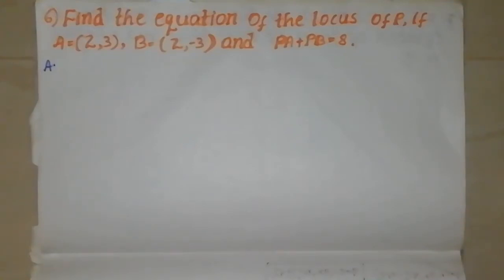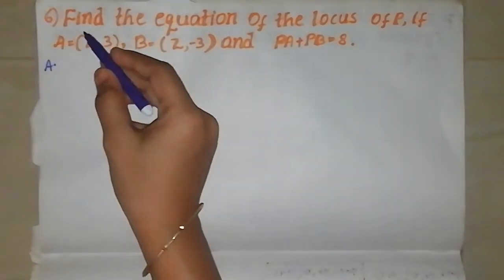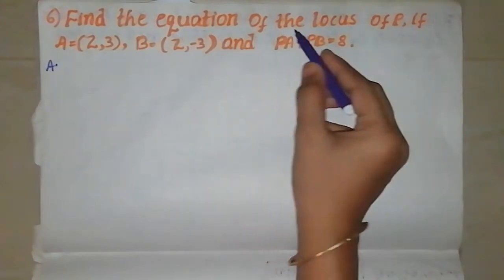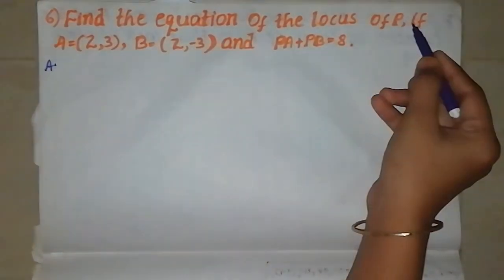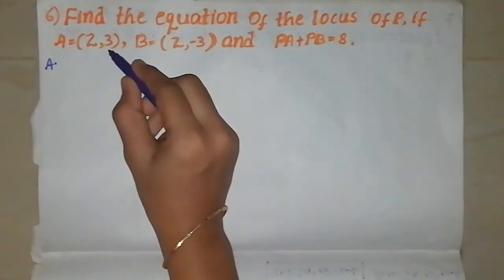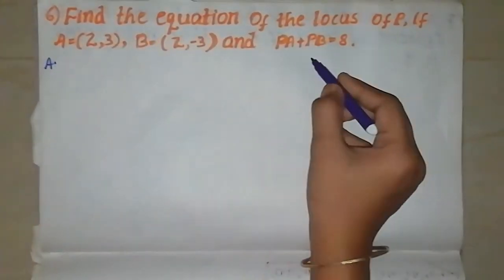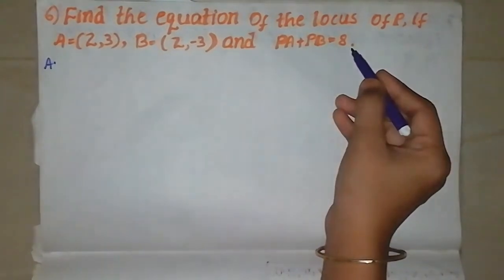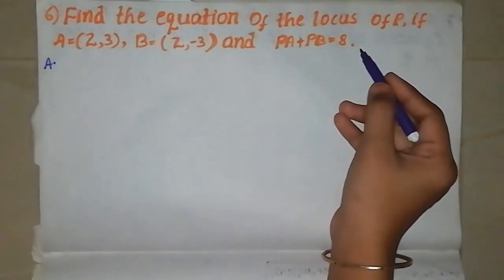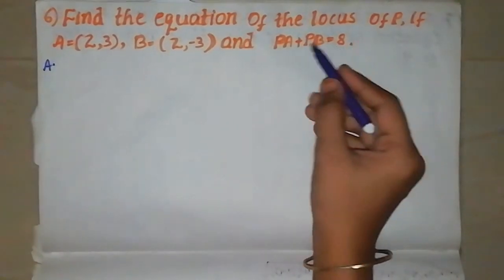Hi friends, I am going to explain this video about Exercise 1, Second Round, Problem 6. Let us know the question: Find the equation of the locus of P if A is equal to (2,3) and B is equal to (2,-3) and PA plus PB is equal to 8.